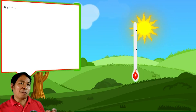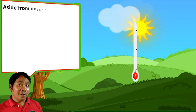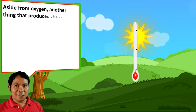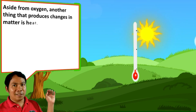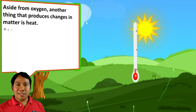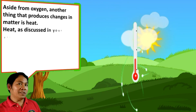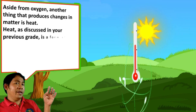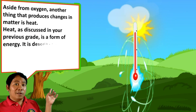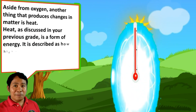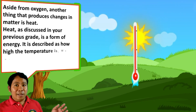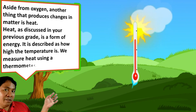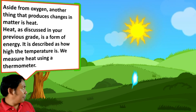Aside from oxygen, another thing that produces changes in matter is heat. Heat, as discussed in your previous grade, is a form of energy. It is described by how high or how low the temperature is. We measure heat using a thermometer.